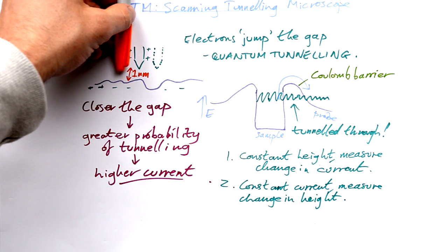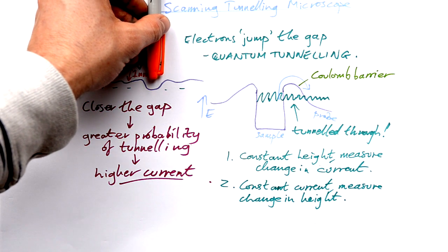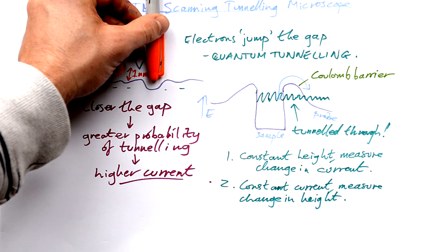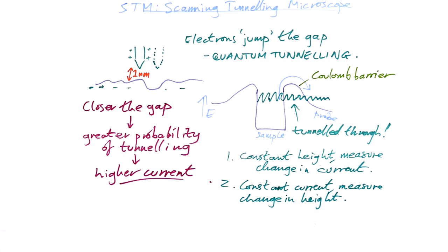Same thing here. The probe goes along and it says constant current, constant current, constant current. Oh, actually the current's gone down. I need to move it down in order to get a constant current again. And then it goes back up there. So that's the two ways that you can use a scanning tunneling electron microscope.